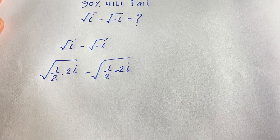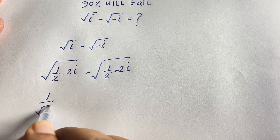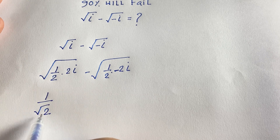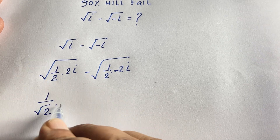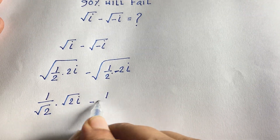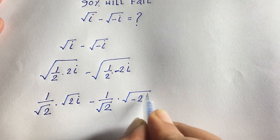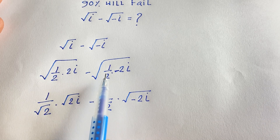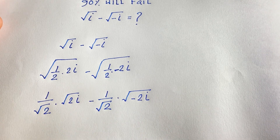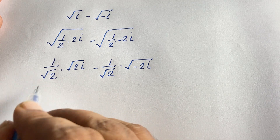Now this equation becomes: (1/√2) · √(2i) minus (1/√2) · √(−2i). Here, √1 = 1 and the denominator is √2. So the first term is (1/√2) · √(2i) and the second term is (1/√2) · √(−2i).